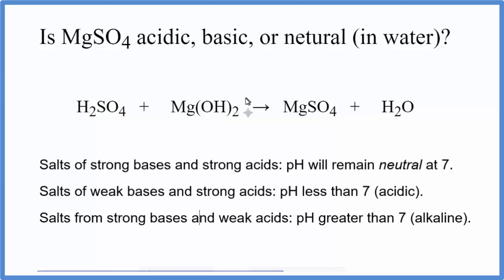To do that, we need to look at the reaction, the neutralization reaction, that created the magnesium sulfate. We have here sulfuric acid, H2SO4, and then magnesium hydroxide, Mg(OH)2. We mix these together, they react, they produce magnesium sulfate, our salt, and then water. This is a neutralization reaction.